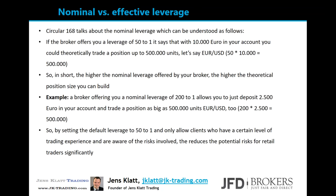I know that reduced effective leverage — and we're talking about effective leverage here, which I'll introduce shortly; not the nominal leverage of 50 to 1 — results in a high probability of increasing the chances of long-term profitability in trading. Circular 168 talks about the nominal leverage. If a broker offers you a leverage of 50 to 1, it means that with a 10,000 euro account, you could theoretically trade a position up to 500,000 units — for example, EUR/USD. 50 times 10,000 equals 500,000 — though this is purely theoretical, not accounting for margin, spread, and commissions.